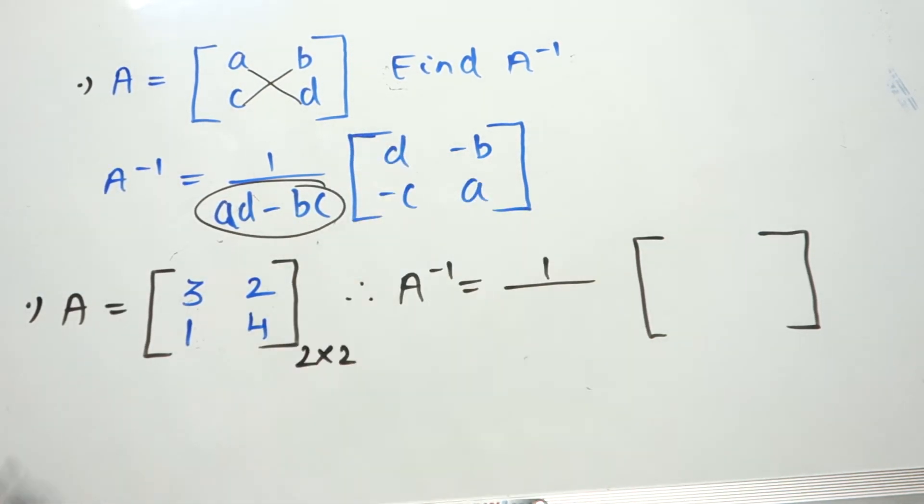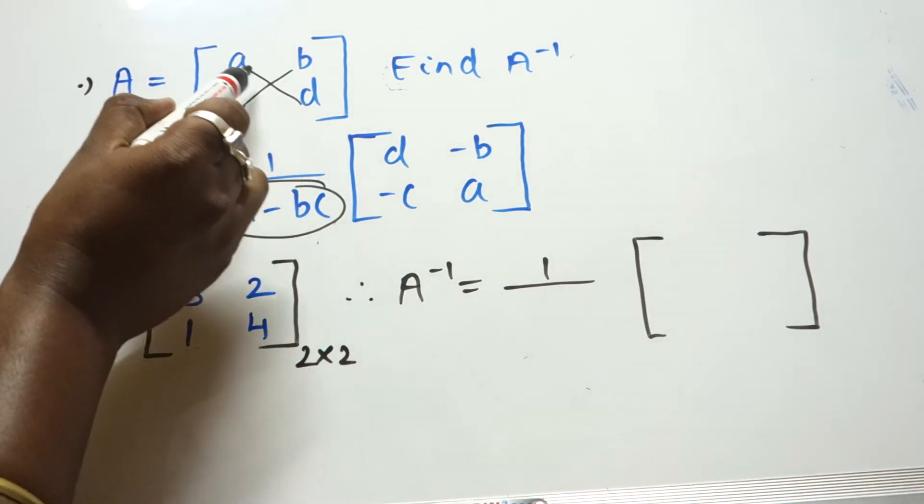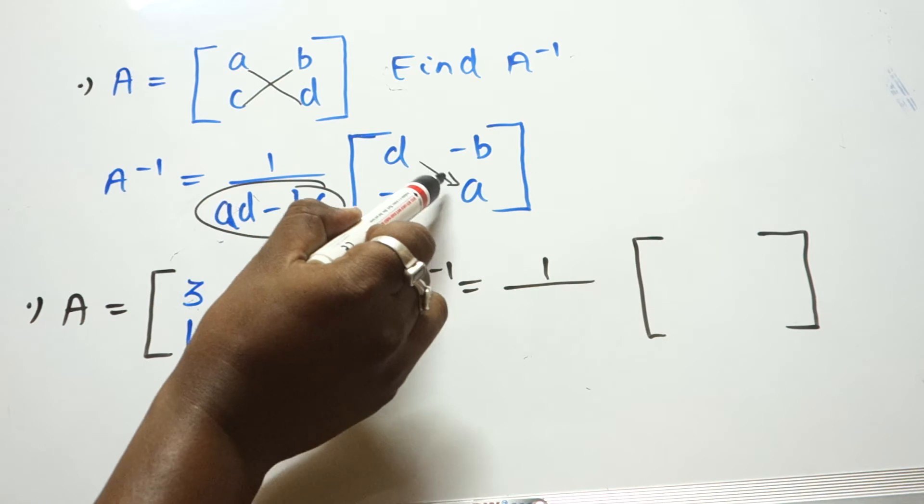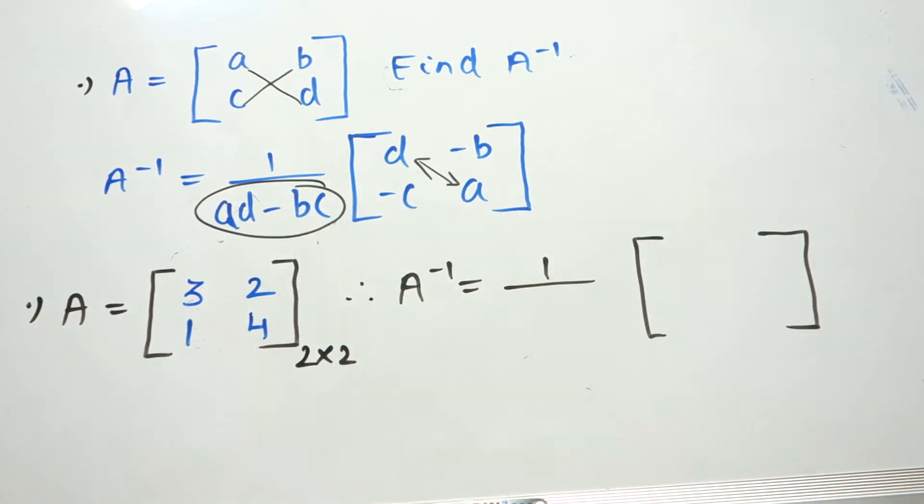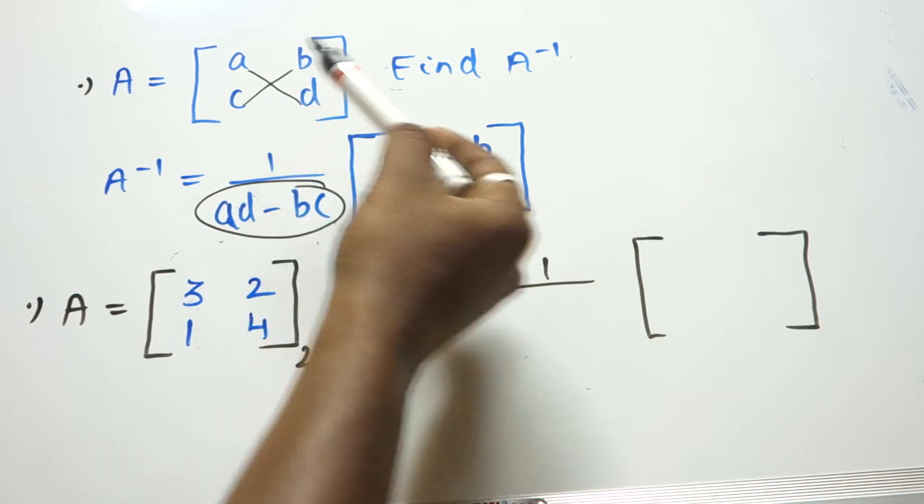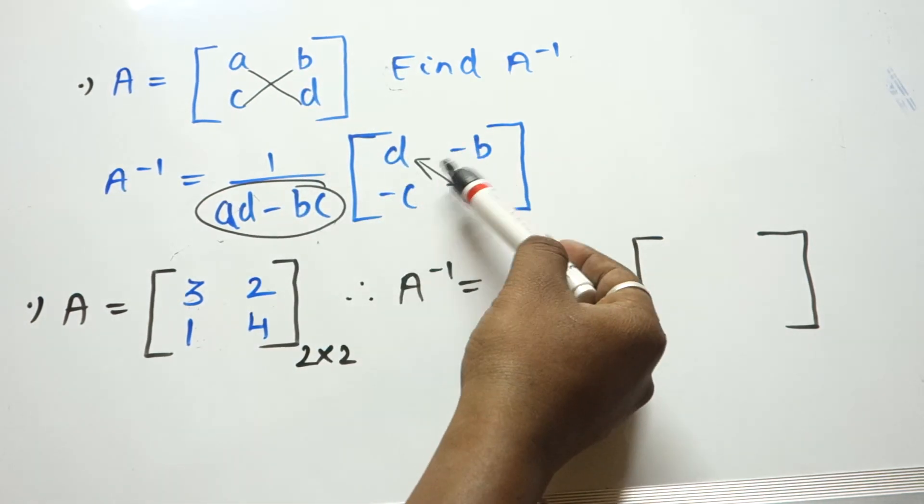Then simply what you have to do is interchange this value, interchange this value, and write down the opposite symbol for this element.